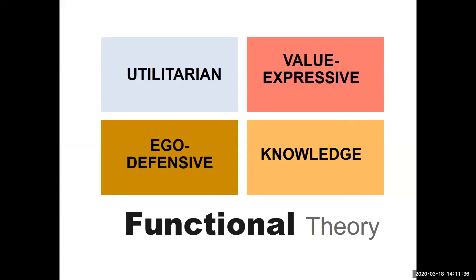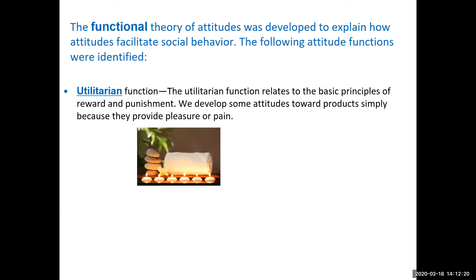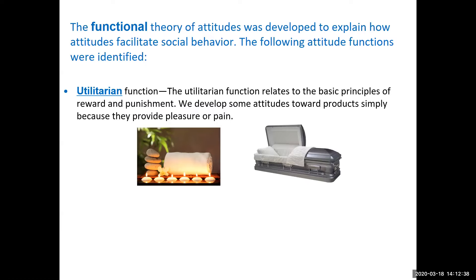Attitudes can serve functions. According to research, there are four different types of functions that attitudes can serve for consumers helping them make decisions about products, brands, or ideas. The first is the utilitarian function, which relates to the basic principles of reward and punishment. You might develop an attitude toward a product because it makes you feel good, or perhaps feel negative because it causes pain or sadness. For example, a spa serves a utilitarian function because you'd receive pleasure there; a coffin, on the other hand, would evoke sadness.